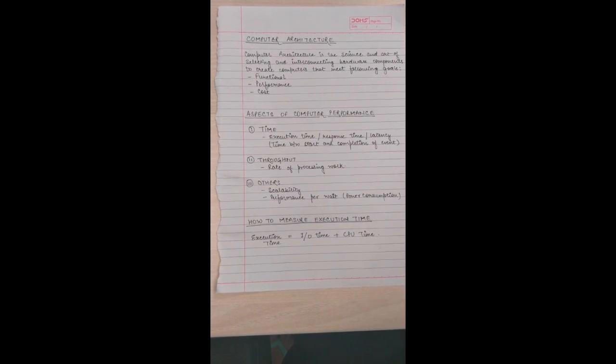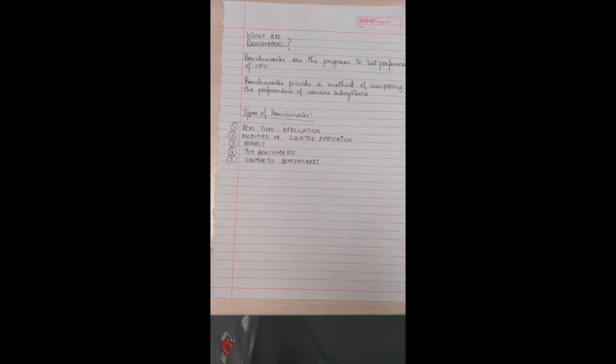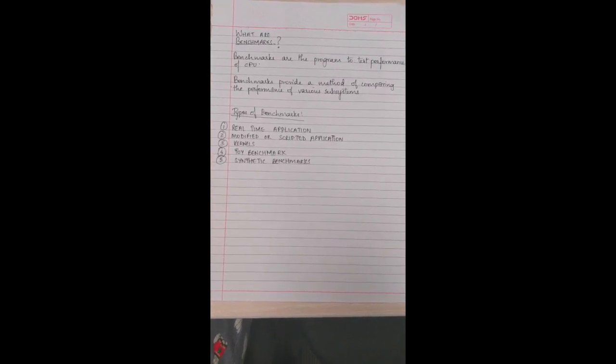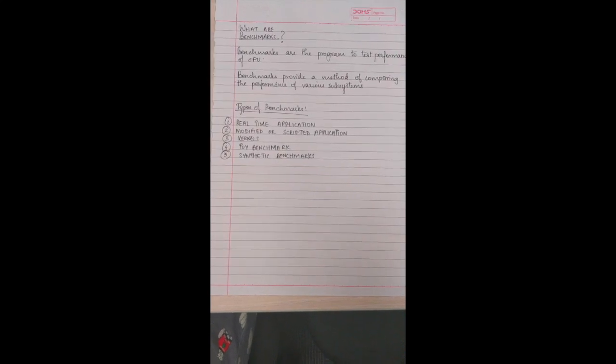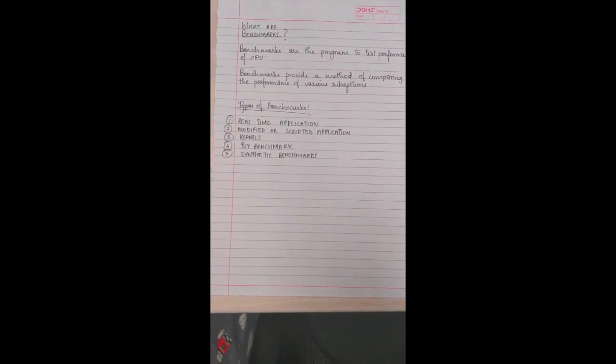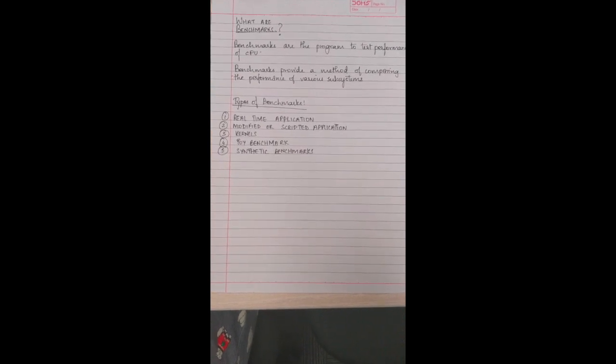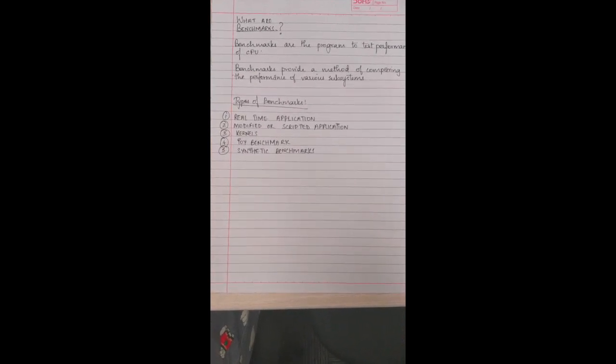How to measure execution time? Execution time is equal to input/output time plus the act of running a computer program, a set of programs or other operations in order to assess the related performance of an object.